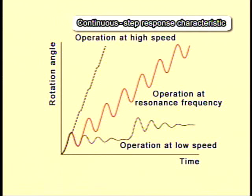When it is operated at a much higher speed, the motor proceeds to the next movement before the overshooting and the undershooting occur, and so the vibrations are reduced and the operation becomes smoother.